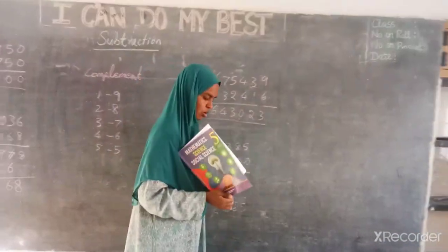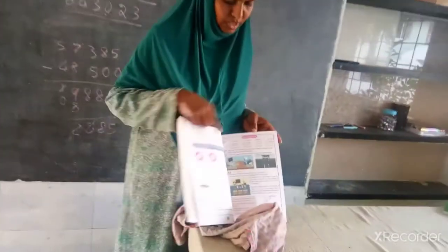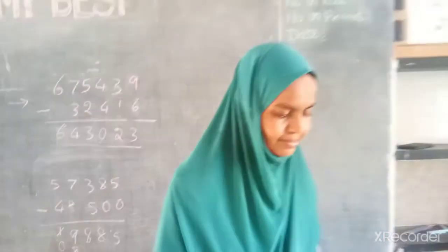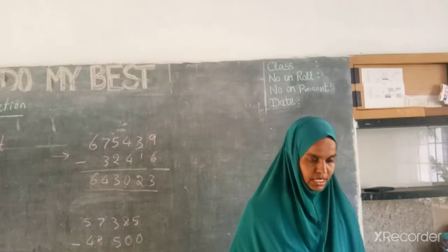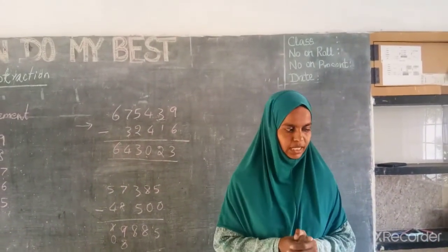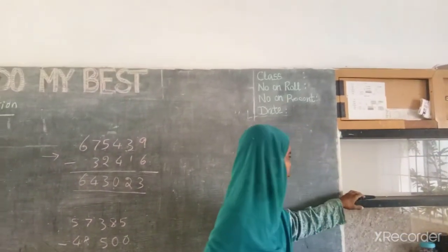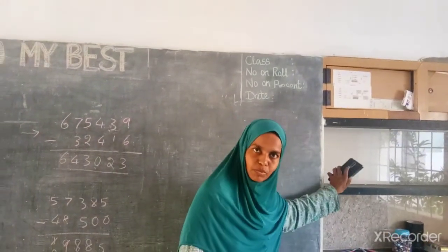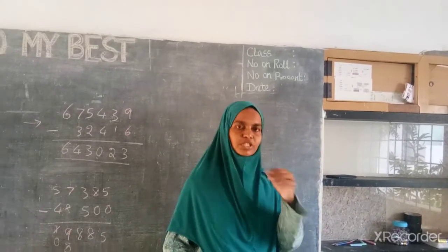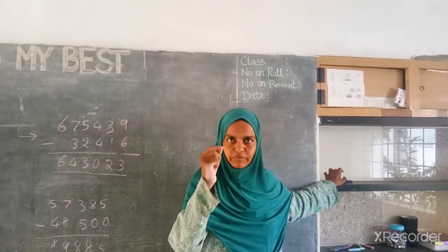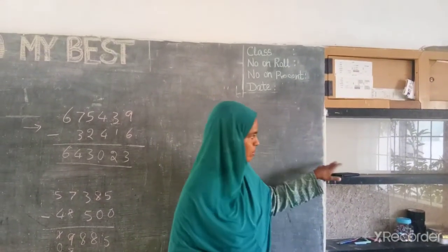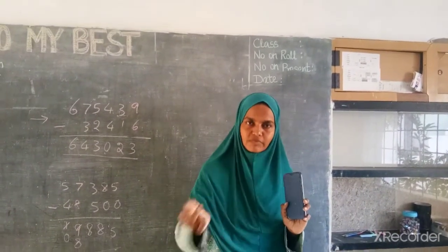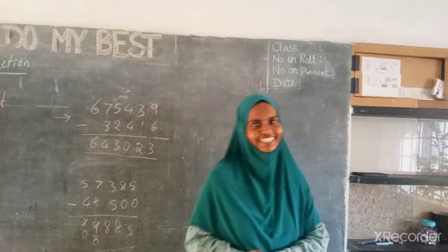Alright kids, today your homework is: see in your book and complete exercise 2.6. Also, kids, at home your parents, brothers, and sisters will have their mobile phones. You should not just pick up someone else's mobile phone. You have to get permission from your parent — if it is your father's mobile, get permission from your father; if it is your sister's mobile, get permission from them. You should not use others' things without getting permission. Okay kids, take care.